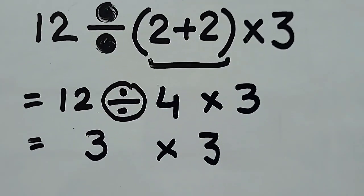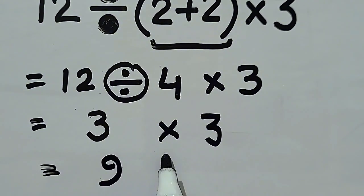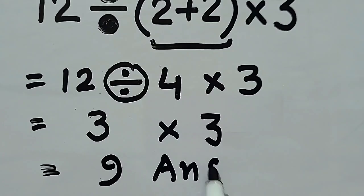Now, it is very simple. 3 times 3 is equal to 9. Hence, 9 is our answer. Thank you.